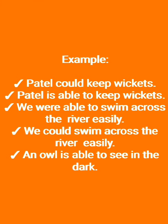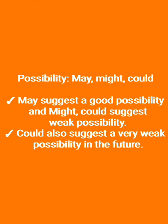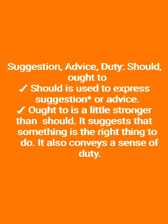इसमें 'could' past है, 'is able to' present है। Be able to present और past दोनों में यूज होता है। Possibility के लिए हम may, might, और could का यूज करते हैं। May suggests a good/strong possibility, जबकि might और could weak possibility दिखाते हैं। Could also suggests a very weak possibility in the future — future के लिए could का यूज करते हैं।